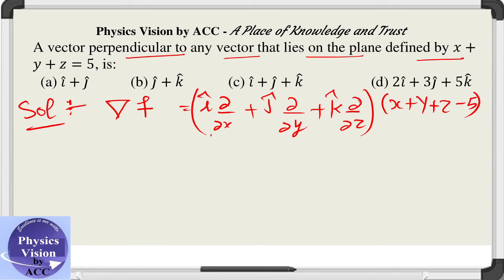When we take the derivatives, firstly we will take the derivative with respect to x, that is i cap. Next is with respect to y, j cap. And next is with respect to z. The resultant is i plus j plus k. So option c is the correct answer to this question.